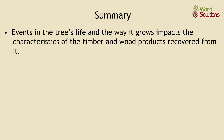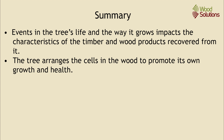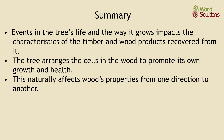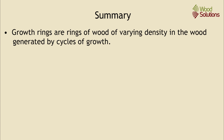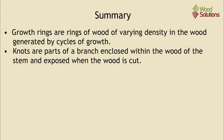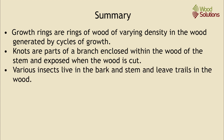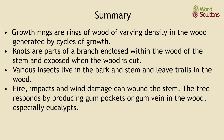In summary, events in the tree's life and the way it grows impacts the characteristics of the timber and the wood products recovered from it. The tree arranges the cells in the wood to promote its own growth and health, and this naturally affects wood's properties from one direction to another — radially, tangentially and longitudinally. Growth rings are rings of wood of varying density generated by cycles of growth. Knots are parts of a branch enclosed within the wood of the stem and exposed when the wood is cut. Various insects live in the bark and stem and leave trails in the wood. And fire, impact and wind damage can wound the stem.